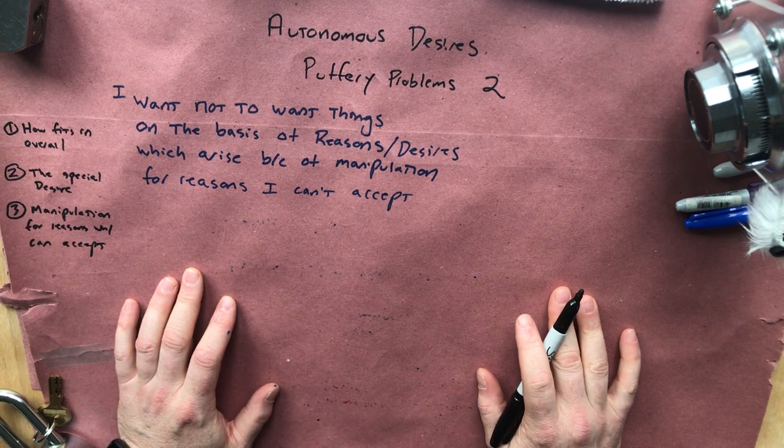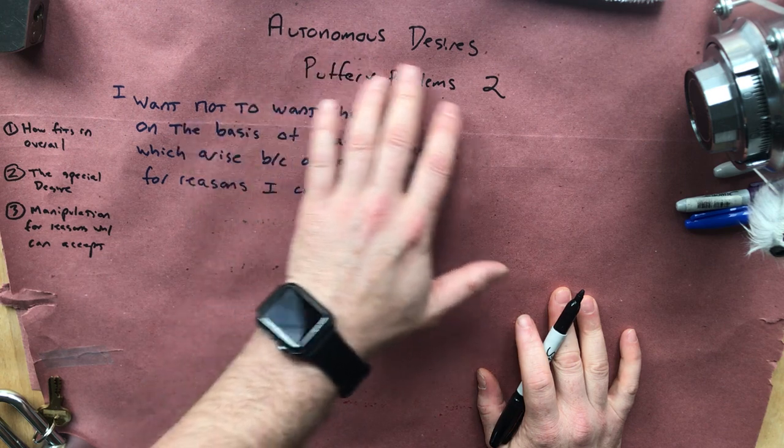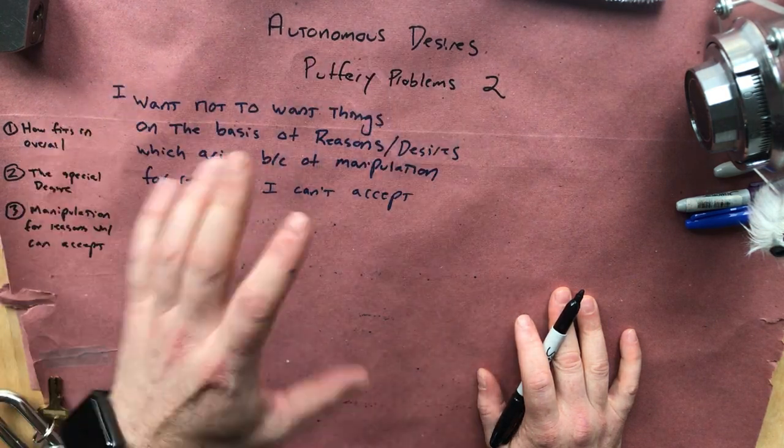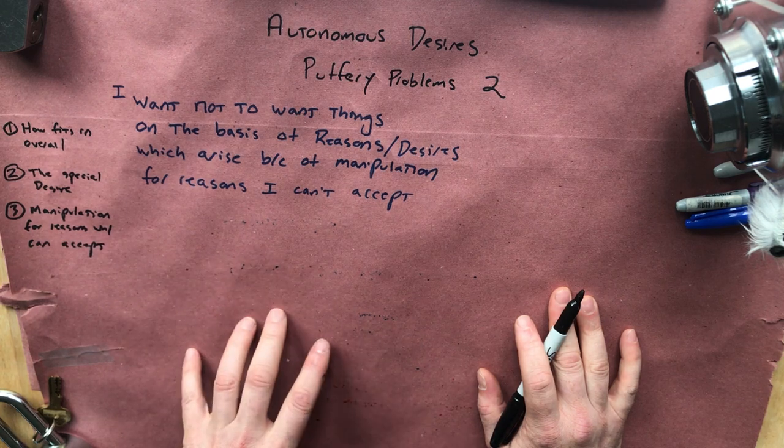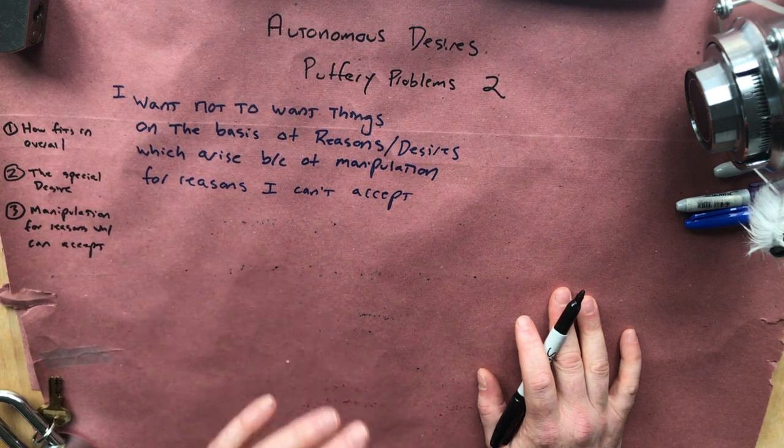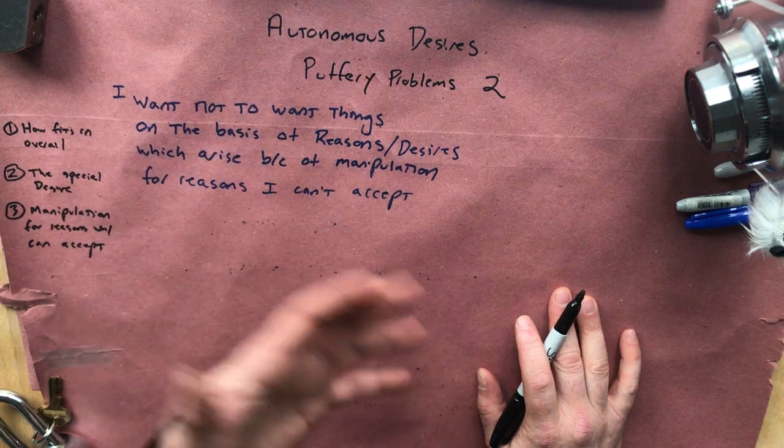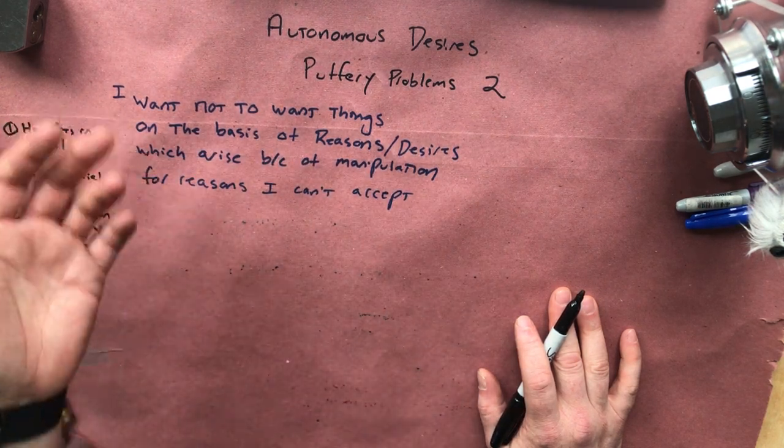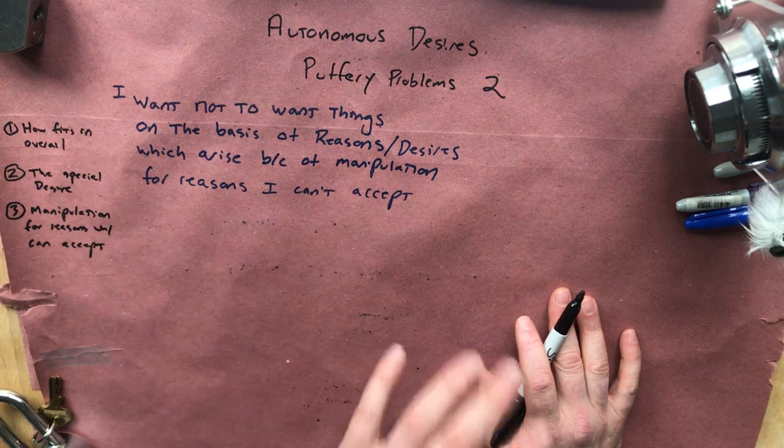Let's talk about the second problem that Chris raises with respect to autonomous desires. This is section A of the paper. This move that he's going to make here is important because it's a very central move. He's going to make it in basically the rest of the paper. The thing we talked about in the last video comes up too in the other parts of the argument.